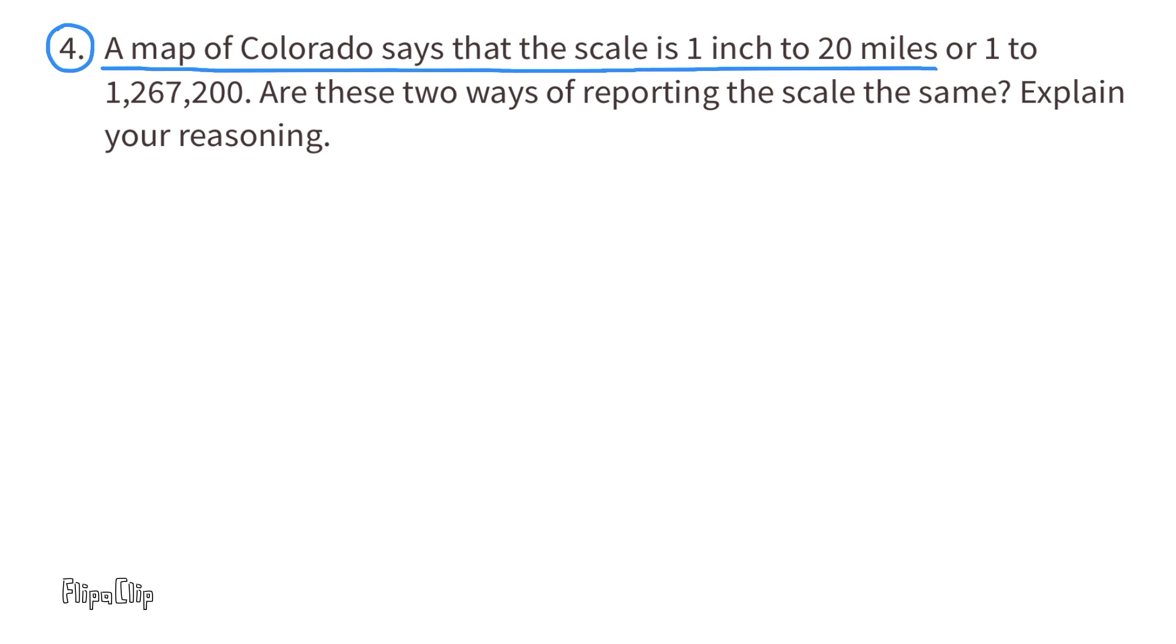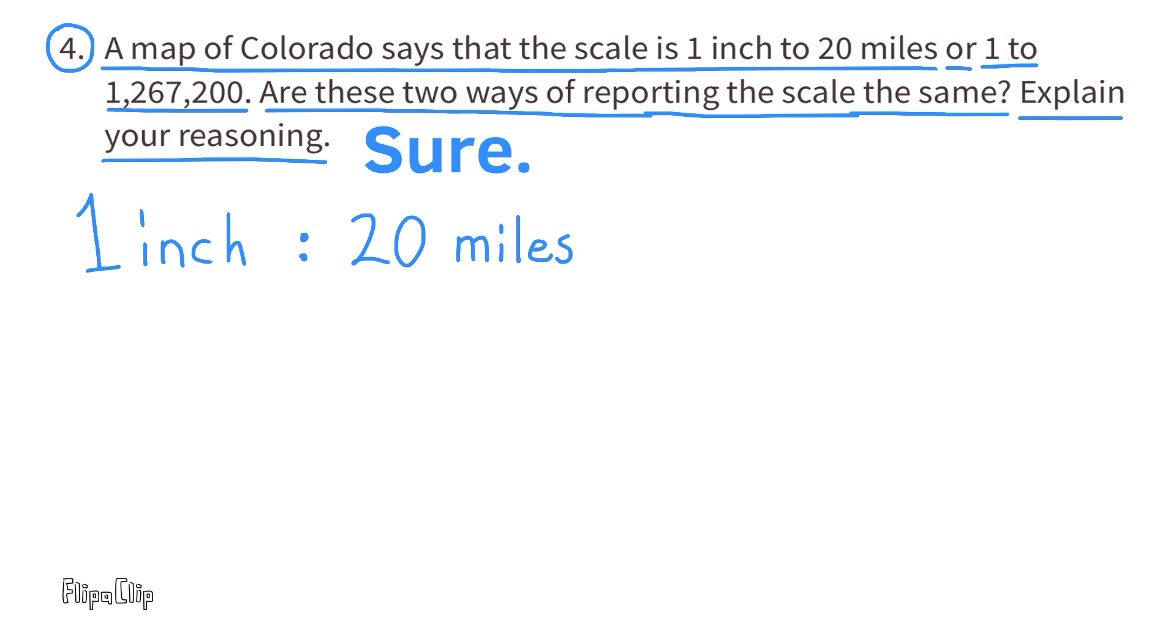Number 4. A map of Colorado says the scale is 1 inch to 20 miles, or 1 to 1,267,200. Are these two ways of reporting the scale the same? Explain your reasoning. Sure they are, and let me try to explain why. They started out by saying that the scale is 1 inch to 20 miles, and I already know that there are 12 inches to 1 foot.